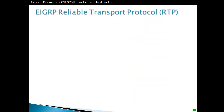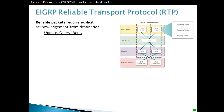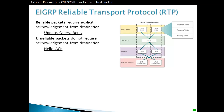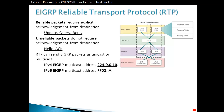EIGRP Reliable Transport Protocol, or RTP: reliable packets require explicit acknowledgement from the destination. Update packets, query packets, and reply packets all require acknowledgement, which forms reliability. EIGRP also sends unreliable packets — hello and acknowledgement packets — which do not get acknowledged. RTP can send EIGRP packets as unicast or multicast. The IPv4 EIGRP multicast address is 224.0.0.10, and the IPv6 EIGRP multicast address is FF02::A.